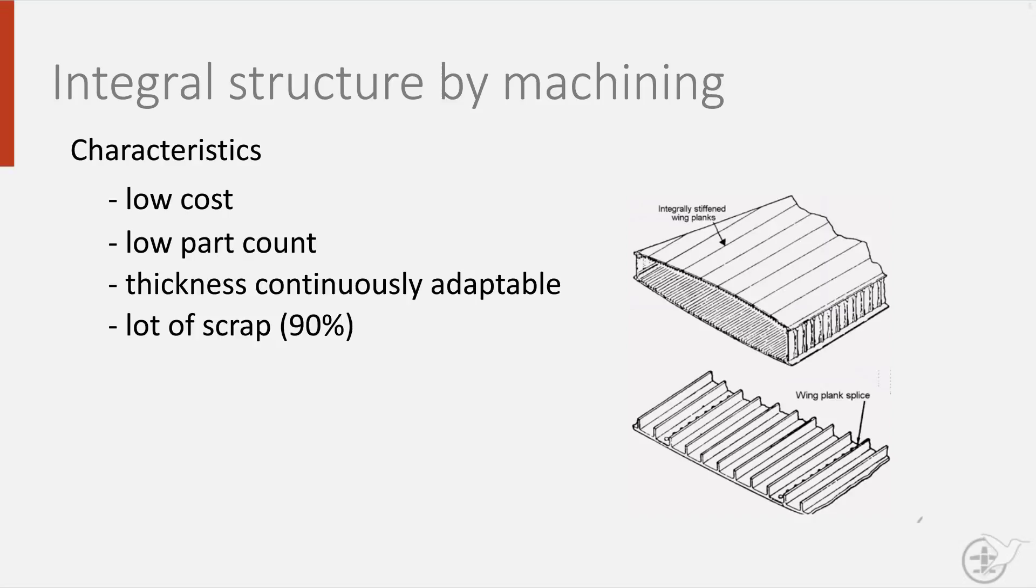The downside of integral machine structures is that the machining process limits the type of stiffeners to simple shapes only. Another major disadvantage is that once a crack has been initiated, it is free to grow continuously, whereas build-up parts contain natural barriers that stop or delay the crack. This is why an integral structure is considered less damage tolerant than a build-up structure.